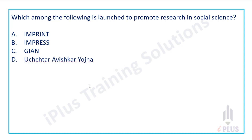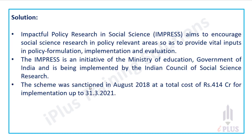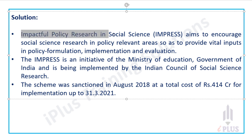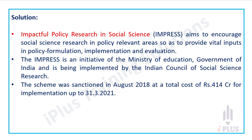Which among the following is launched to promote research in social science? The answer is IMPRESS — Impactful Policy Research in Social Science. IMPRESS aims to encourage social science research in policy-relevant areas so as to provide vital inputs in policy formulation, implementation, and evaluation.